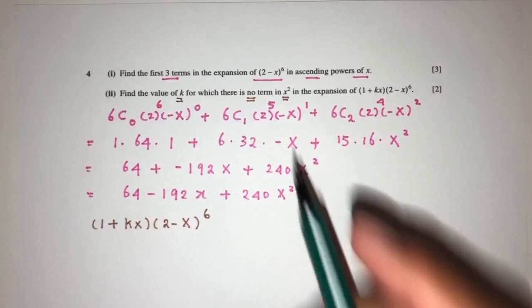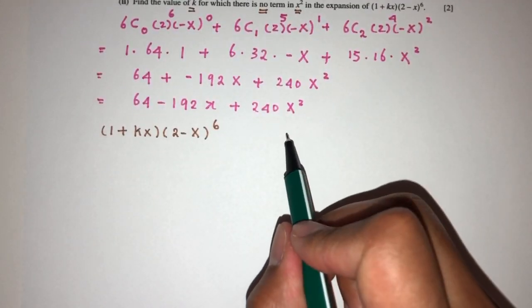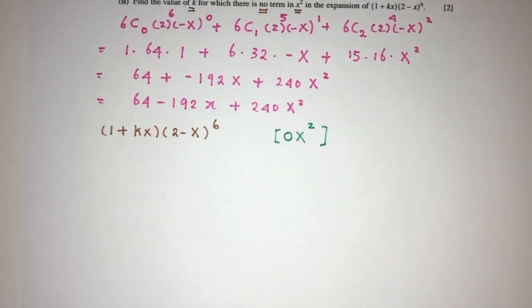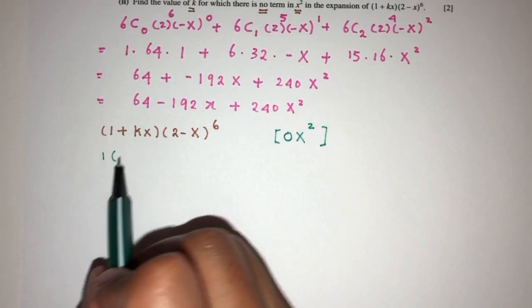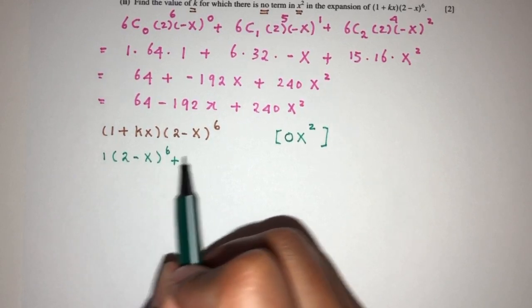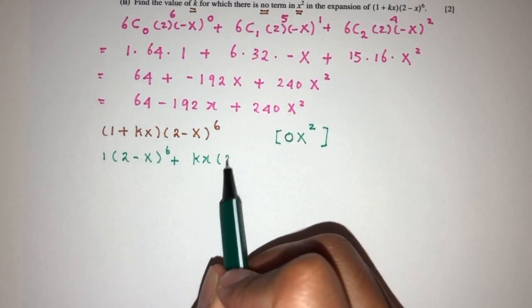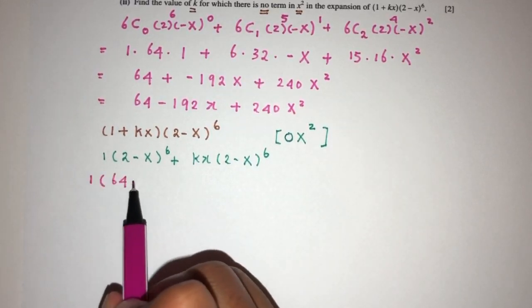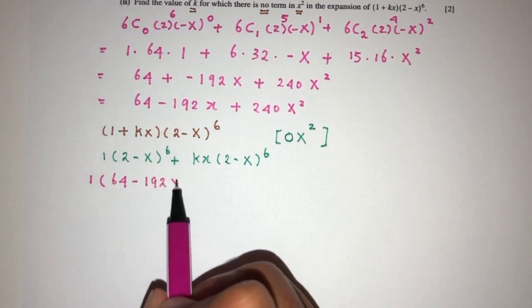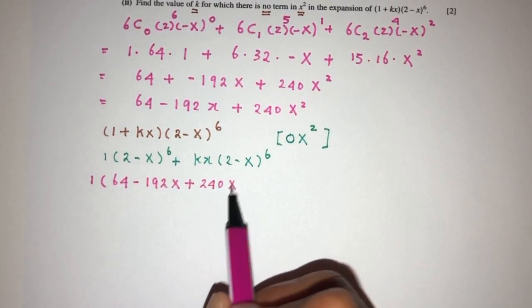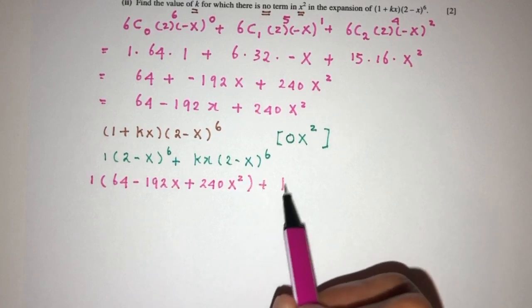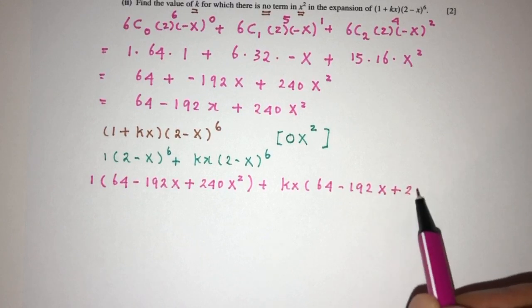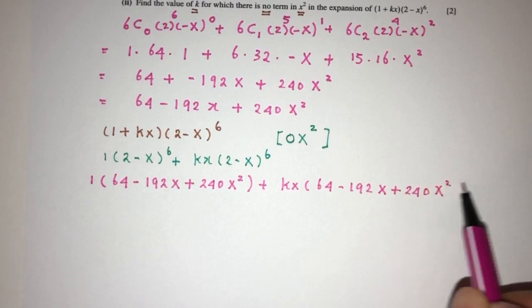It tells you that we have no term in x squared, which means the term in x squared is 0x squared. Using this, we have to find the value of k. Now how would you expand this? It is simply 1 times (2 - x) power 6 plus kx times (2 - x) power 6. Now for the first one is 1 times 64 minus 192x plus 240x squared plus kx times 64 minus 192x plus 240x squared from part 1, right?